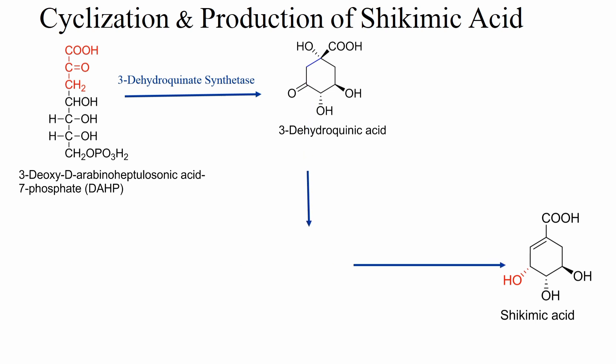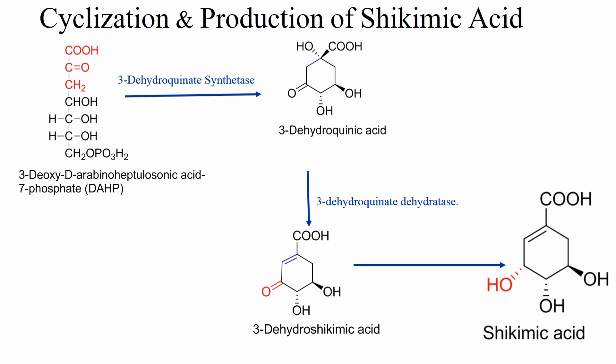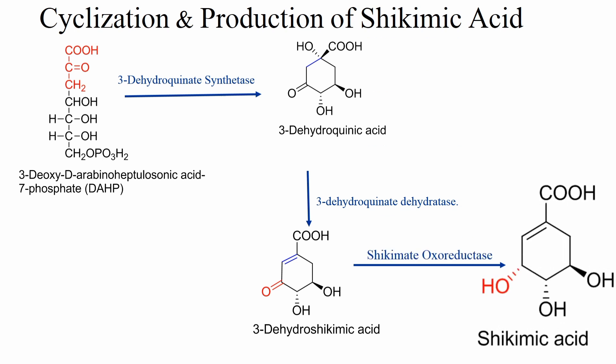In the first step, 3-dehydroquinic acid loses water molecules and forms 3-dehydroshikimic acid in the presence of an enzyme called 3-dehydroquinate dehydratase. In the second step, 3-dehydroshikimic acid is converted to Shikimic Acid in the presence of an enzyme called shikimate oxidoreductase.